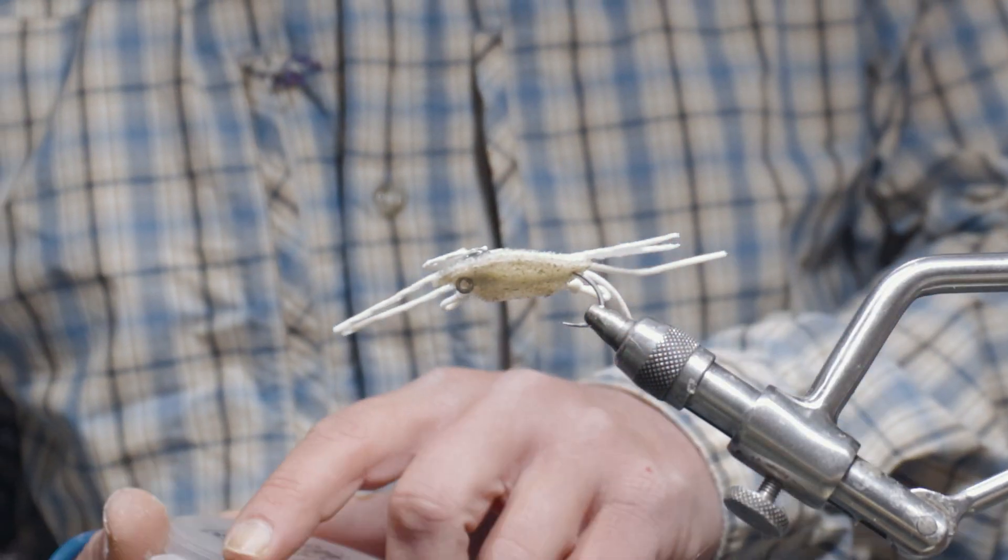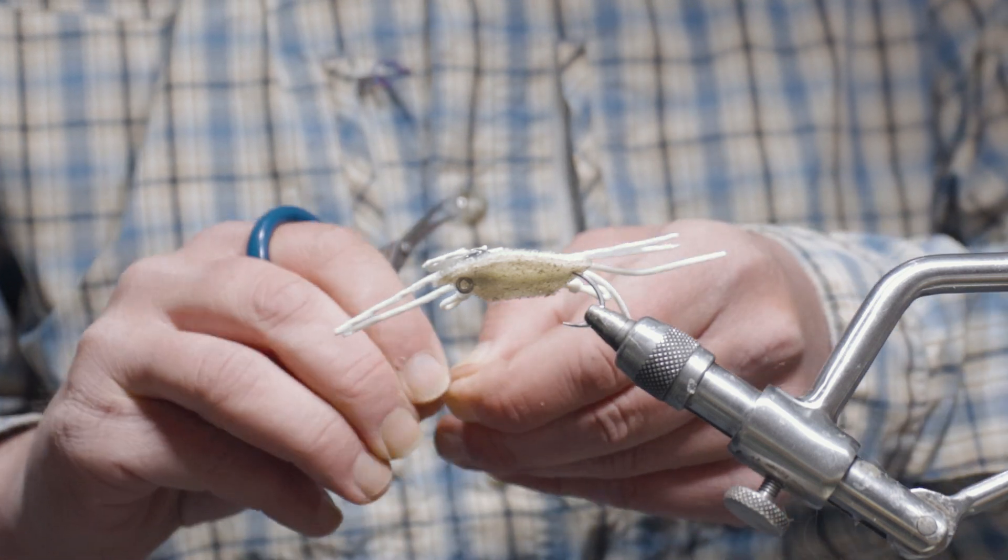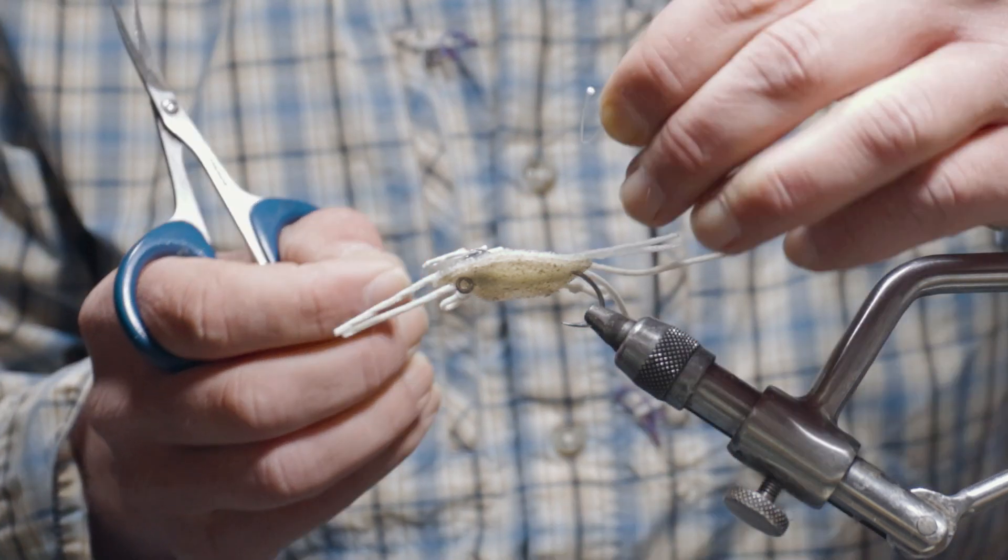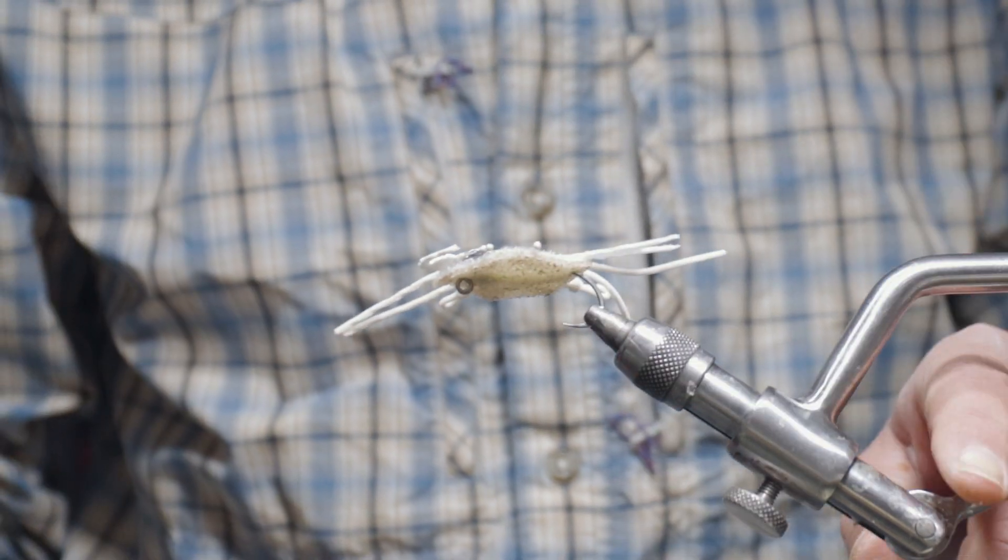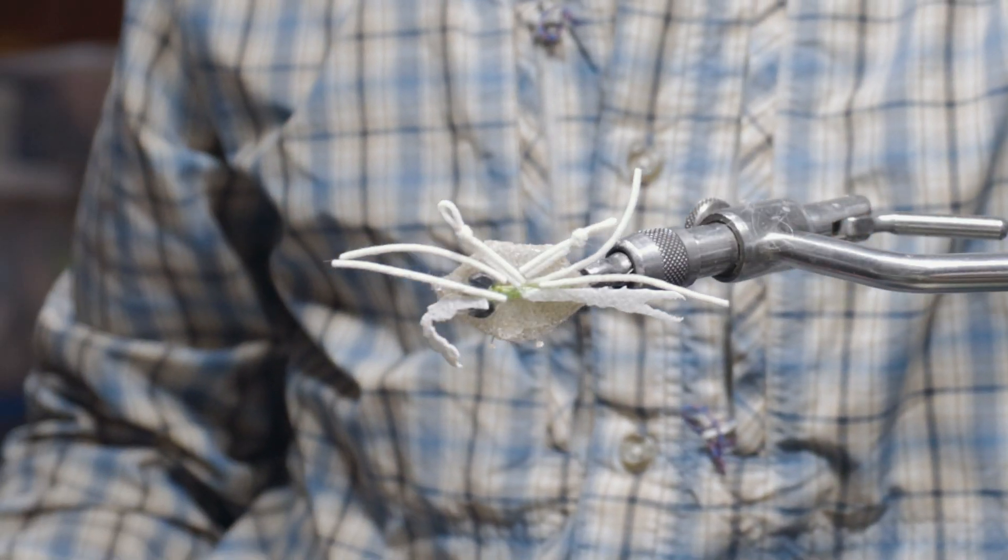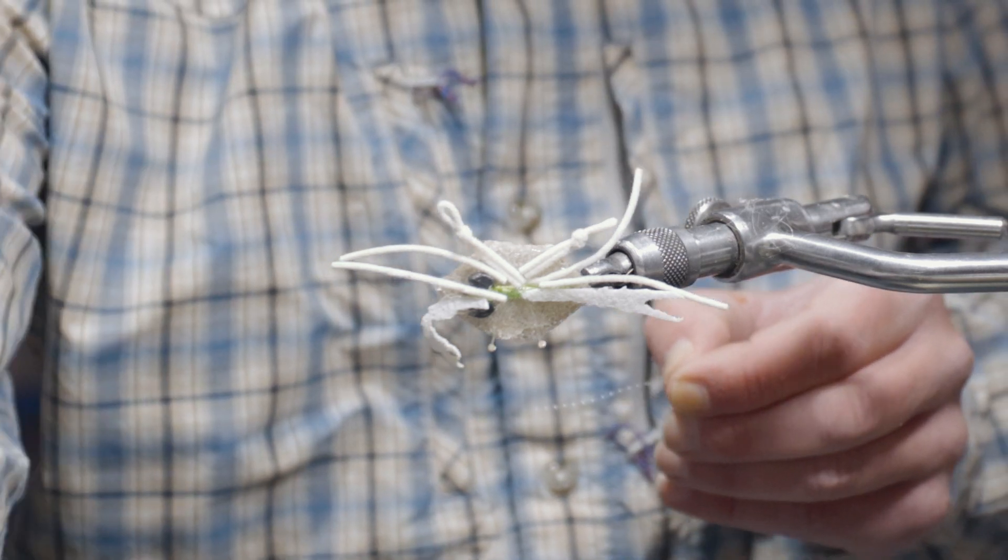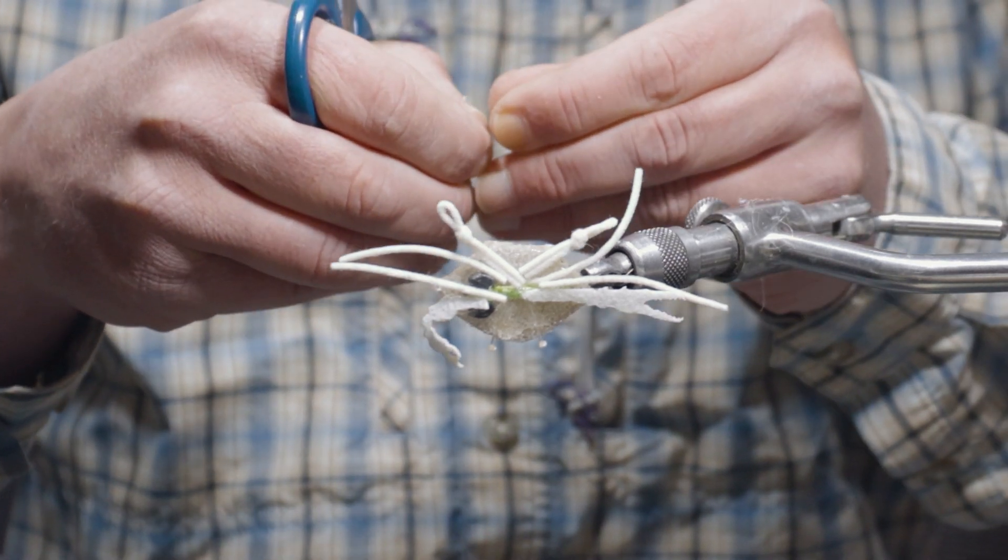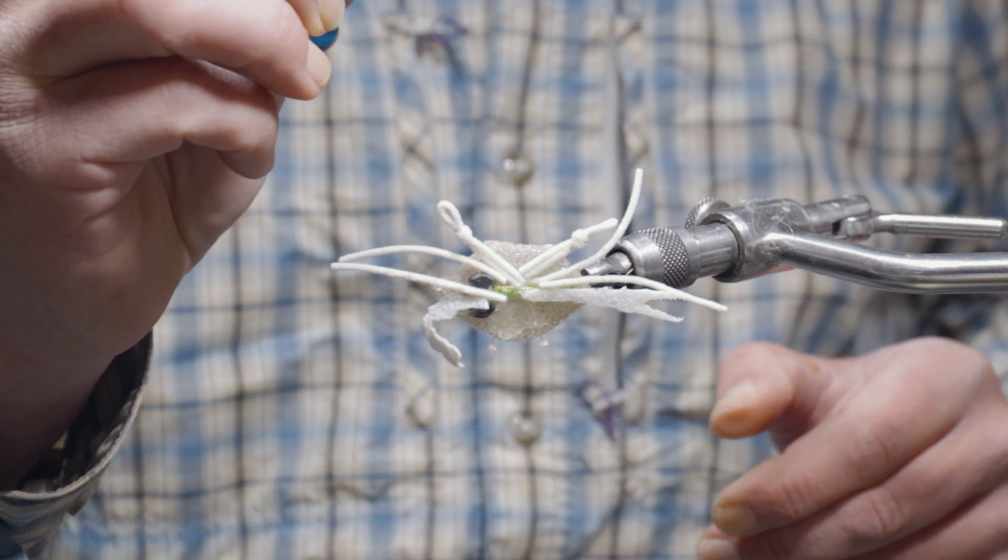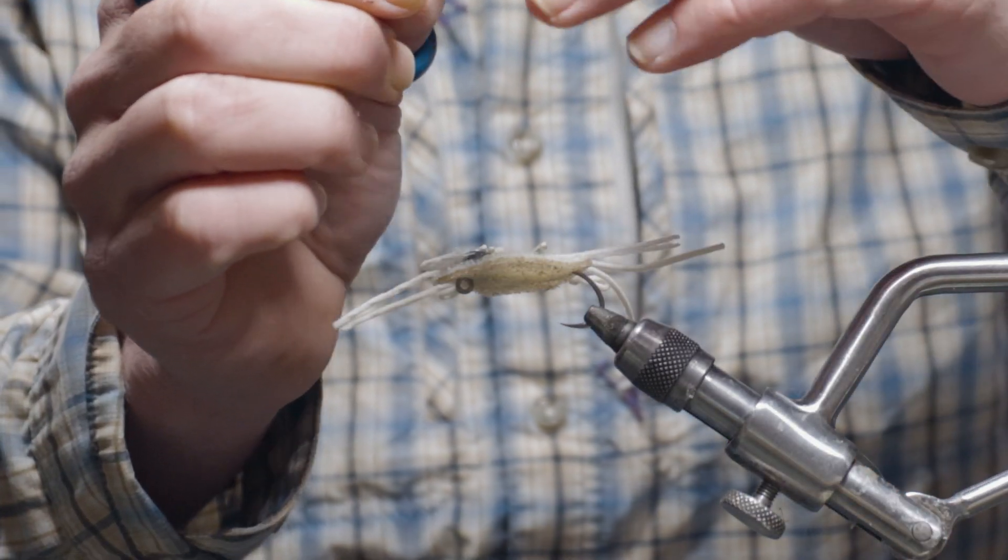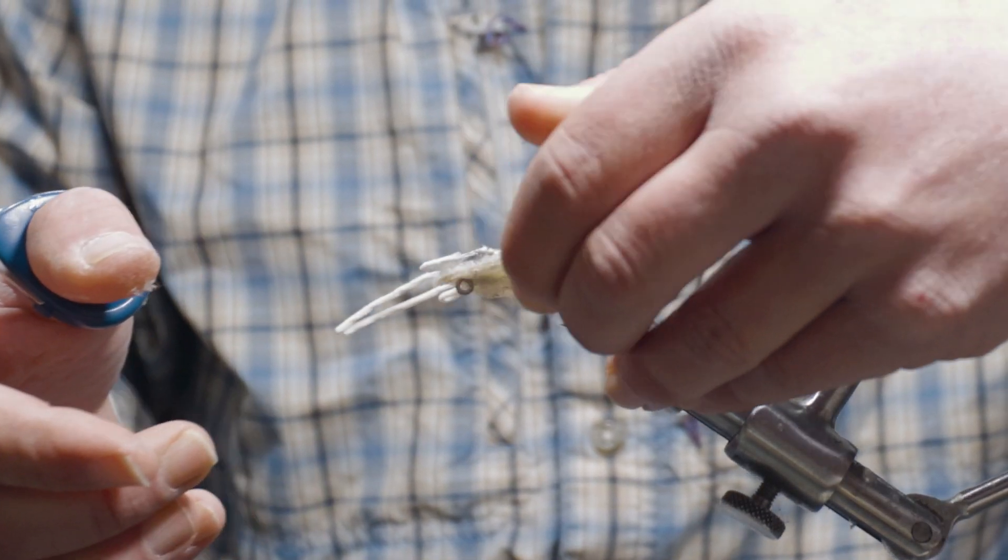Next we're going to take some burnt monofilament eyes and just slide those in right at the top curve like so. And then I'm going to take a small maybe one inch long piece of crystal flash, which are going to be the antennas, and just kind of fold it over and give it a little pinch so you have a little kind of wishbone shape and lay those in right in between the eyes.